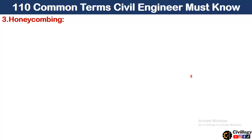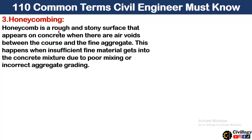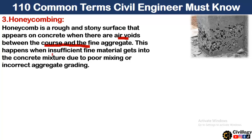The third common term is honeycombing. Honeycombing is a rough and stony surface that appears on concrete when there are air voids between the coarse and fine aggregates. This happens when insufficient fine material gets into the concrete mixture due to poor mixing or incorrect aggregate grading. This will be the result of honeycombing in concrete if finer particles are lesser in ratio.